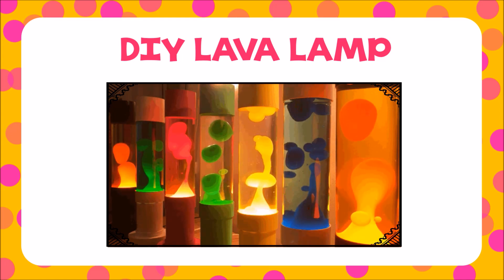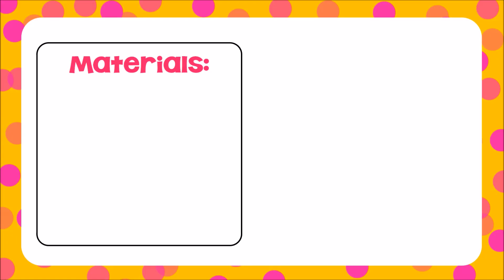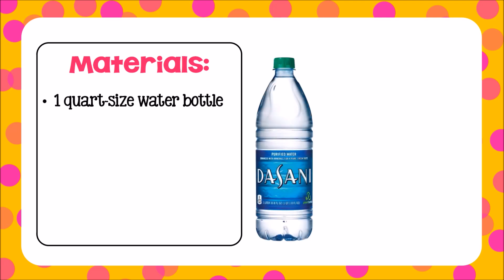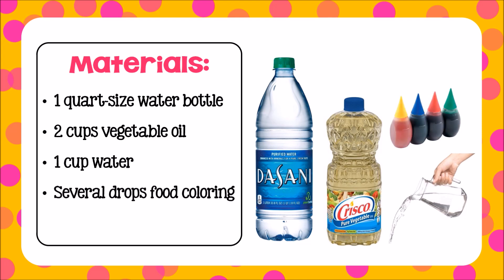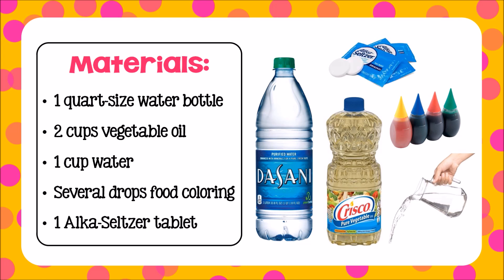You don't need to plug these in and they don't get hot. The materials you will need are one quart-sized empty water bottle, two cups of vegetable oil, one cup of tap water, several drops of food coloring in any one color. And then here's the one thing you might not have — an Alka-Seltzer tablet. If you don't have this, you can just watch my video or wait until one of your grownups can get to the grocery store.